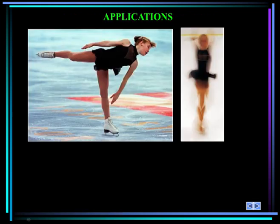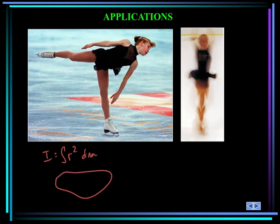Here we see an ice skater. She spends a lot of time either spinning on the ice or rotating through the air. To spin fast or for a very long time, the skater must develop a large amount of angular momentum. If the skater's angular momentum is constant, can the skater vary her rotational speed? How? Let's go back to the definition of moment of inertia — it's equal to the integral of r squared dm, where dm is a small mass element and r is the distance from the point about which you want the angular momentum.